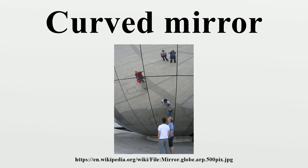concave mirrors are used to gather light from a small source and direct it outward in a beam, as in headlamps and spotlights, or to collect light from a large area and focus it into a small spot, as in concentrated solar power. Concave mirrors are also used to form optical cavities, which are important in laser construction, and in torches and headlights of cars.